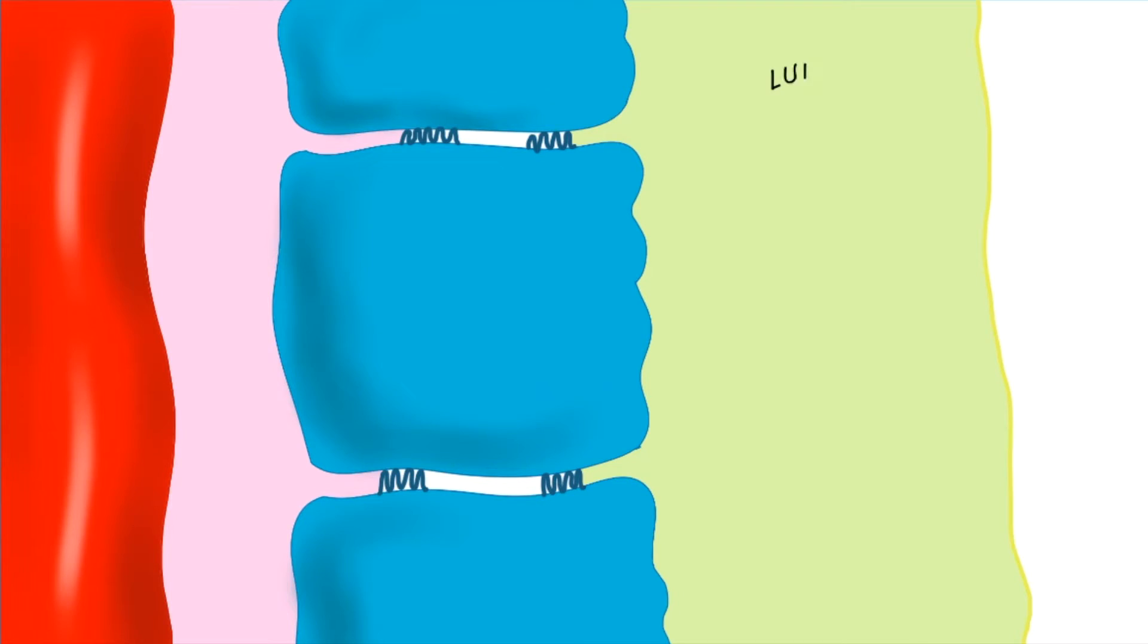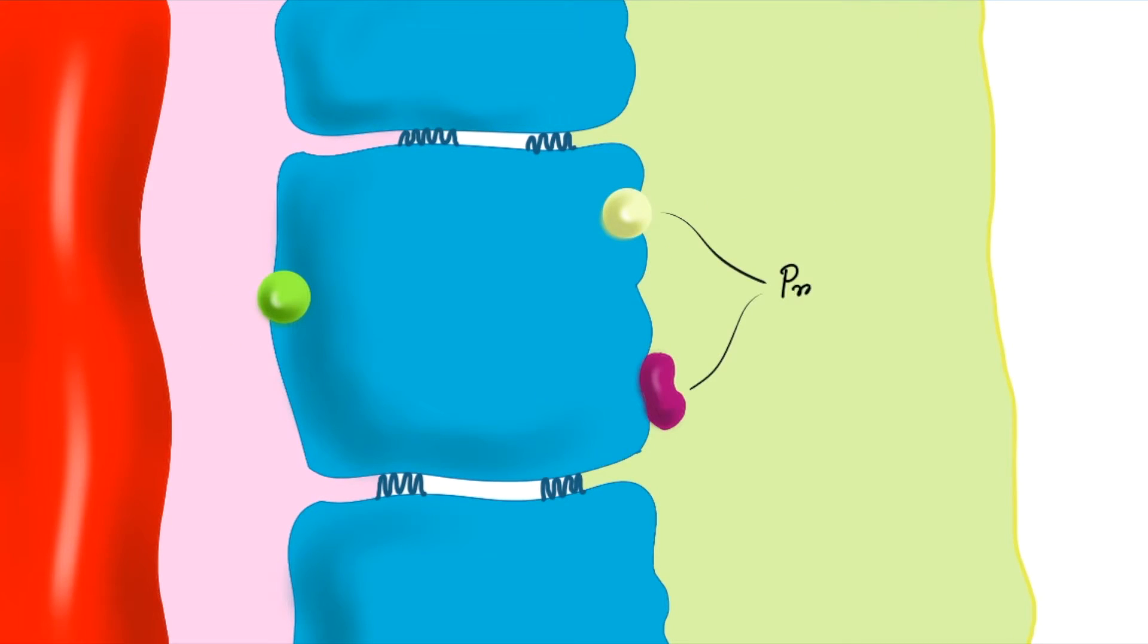Here, I have drawn a proximal convoluted tubule cell. As we have already discussed, the side towards the lumen is called luminal side and the opposite side is basolateral side. Numerous proteins are present in both sides as they are both lipid bilayer membrane. The proteins are basically different transporters or channels. The important thing you have to remember is that the proteins present in different sides are structurally and functionally different. So basically the luminal and basolateral sides have different functions.